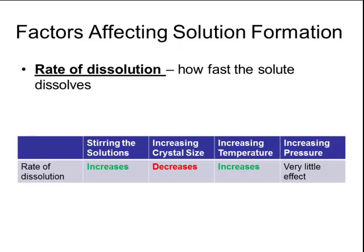This is because large crystals have a small surface area. The smaller the surface area, the less surface there is for the solvent particles to collide and cause dissolution. On the other hand, if you had very tiny particles, there would be lots of surface area, and the greater amount of surface area, the more collisions that will occur between the solvent and the solute, and it will dissolve faster.